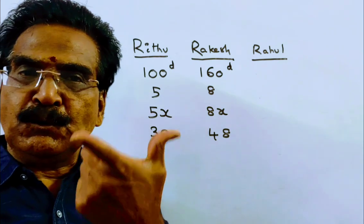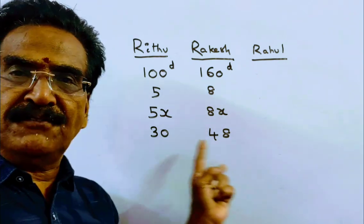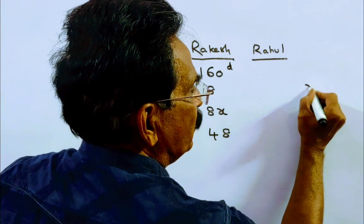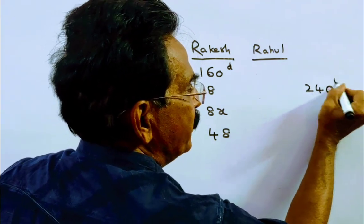Friends, now say the total work, the LCM of these two, 240. So, say the total work is 240 units.